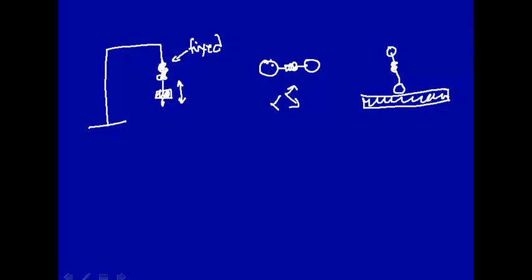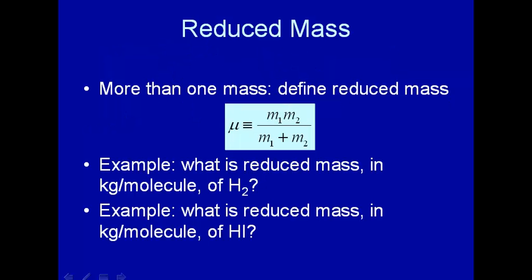But in general, we don't want the one end of the molecule to be fixed. We want it both to vibrate equally. So how does one translate this concept, or this model, into quantum mechanics? Well, that's where the concept of reduced mass comes in.